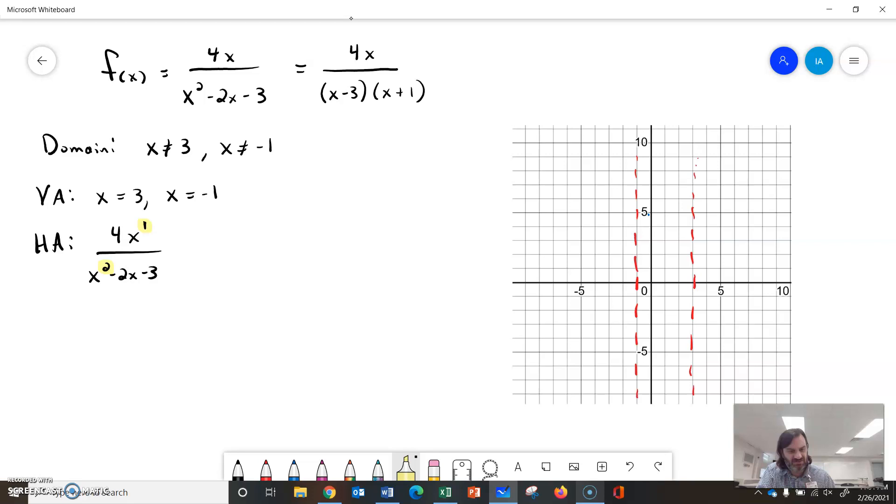so in that case, m is less than n. So I have a horizontal asymptote at y = 0. I'm going to draw that line across here.